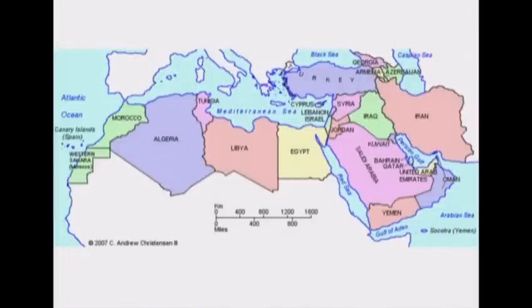There are three basic problems with this modern nation state construct. Number one: nations without states. In the Middle East, the Palestinians are a nation without a state, the Kurds are a nation without a state. Before May 15, 1948, Jews were a nation without a state. The second problem is multinational states — they tend to break, they tend to bust. Yugoslavia is a classic example of a multinational state that broke. Nationalism is a very important force that motivates.